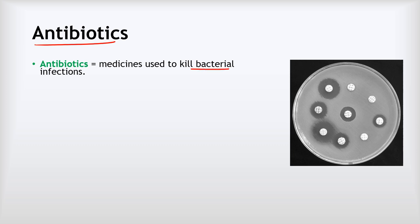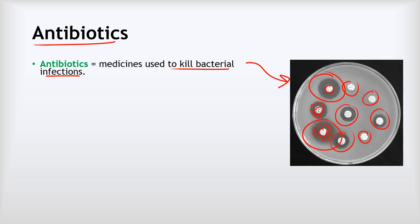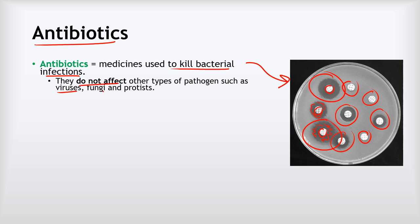Sometimes our immune system struggles to fight a particular pathogen and we'll need to give it help with medicines. One type of medicine is called antibiotics. Antibiotics are medicines used to kill bacterial infections. On this agar plate with a bacterial culture, each disc has different chemicals on it, and you can see zones around some of them where bacteria are not growing — that's the antibiotic effect. Importantly, antibiotics do not affect other types of pathogen such as viruses, fungi and protists. Antibiotics will only help us treat bacterial infections.